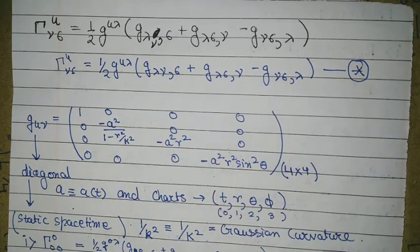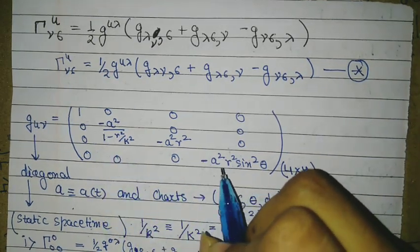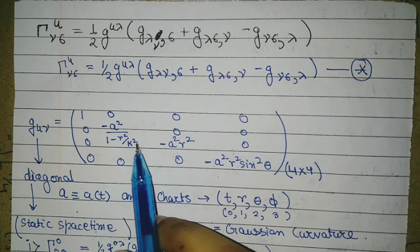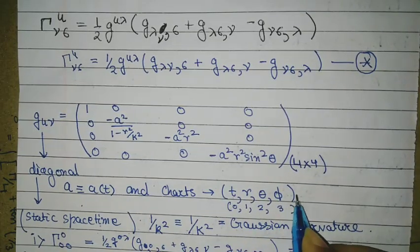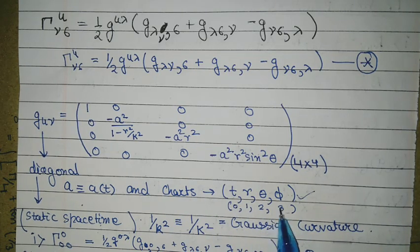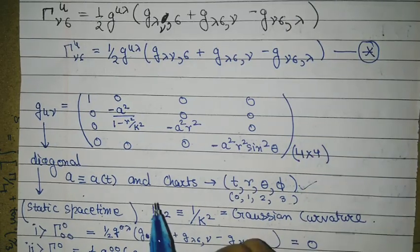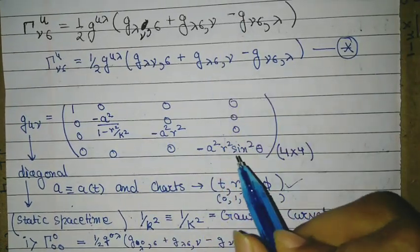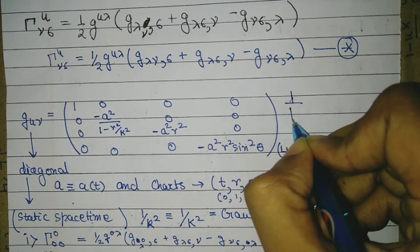Now you can see the Robertson-Friedman metric. Only the diagonal entries are non-zero—the rest are all zero. This is 1, this is -a²/(1-r²/k²), -a²r², and -a²r²sin²θ, where t, r, θ, φ are the chart coordinates which can be exchanged or written as 0, 1, 2, 3 when I show the Christoffel symbols. If you use this metric and find the Christoffel symbols, then calculate the Gaussian curvature, you will see the scalar curvature to be 1/k².